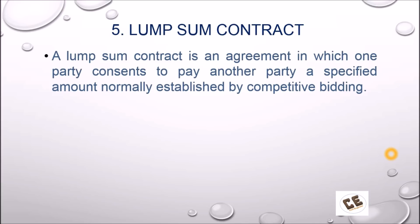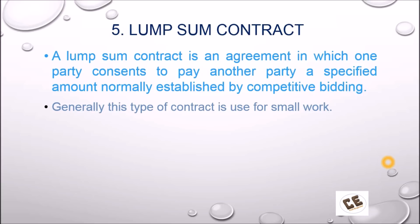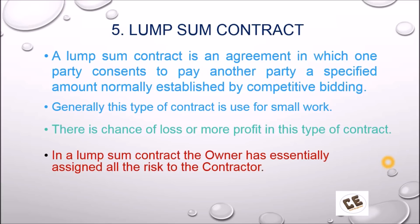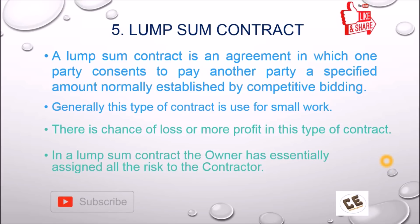The fifth type is the lump sum contract. As the name indicates, this is an agreement in which one party consents to pay another party a specified amount, normally established by competitive bidding. A fixed amount is established between the contractor and owner, and the contractor must complete the work within that amount. This type of contract is generally used for small works because there is a chance of loss or unexpected profit. The owner has essentially assigned all the risk to the contractor — any risk that arises must be borne by the contractor.